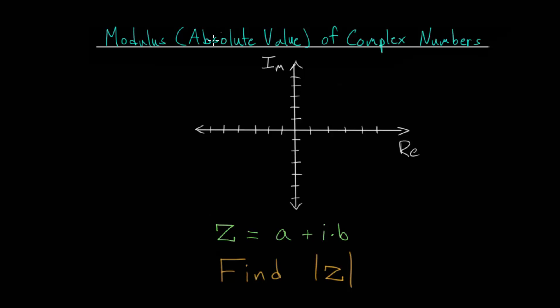Remember that absolute value is essentially just asking how far is that number from the origin. So if we have some complex number z and we plot it on this complex plane, we are just finding its distance from the origin when we're finding its absolute value.